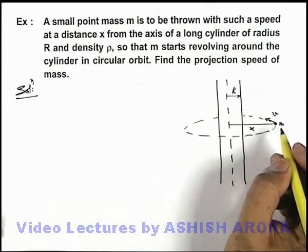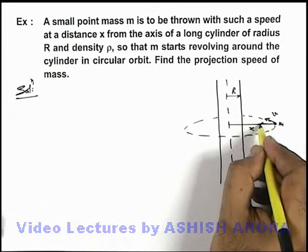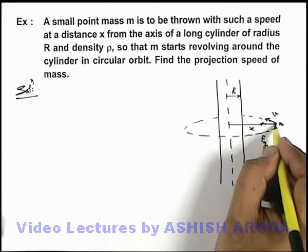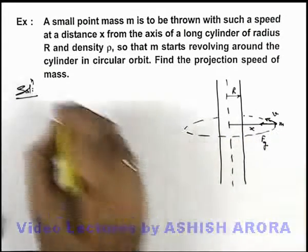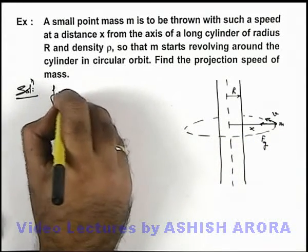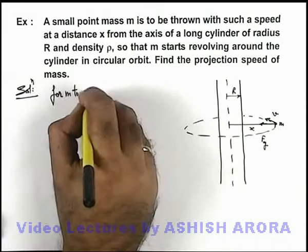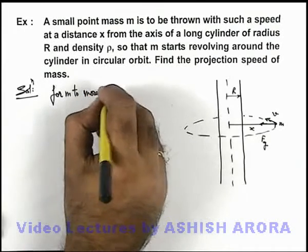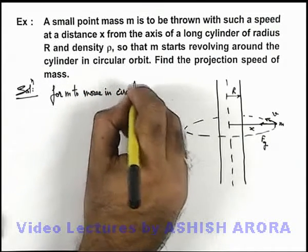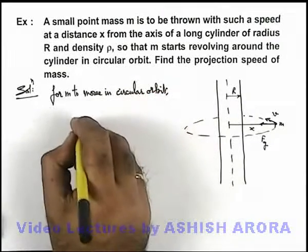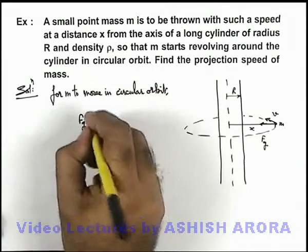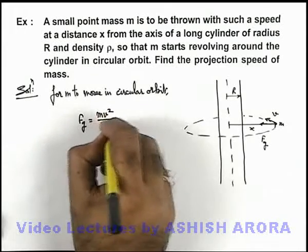We can say whatever gravitational force will be acting on this mass will provide the centripetal force for its circular motion. So we can simply write, for m to move in circular orbit, we must use this gravitational force should be equal to m v squared by x.